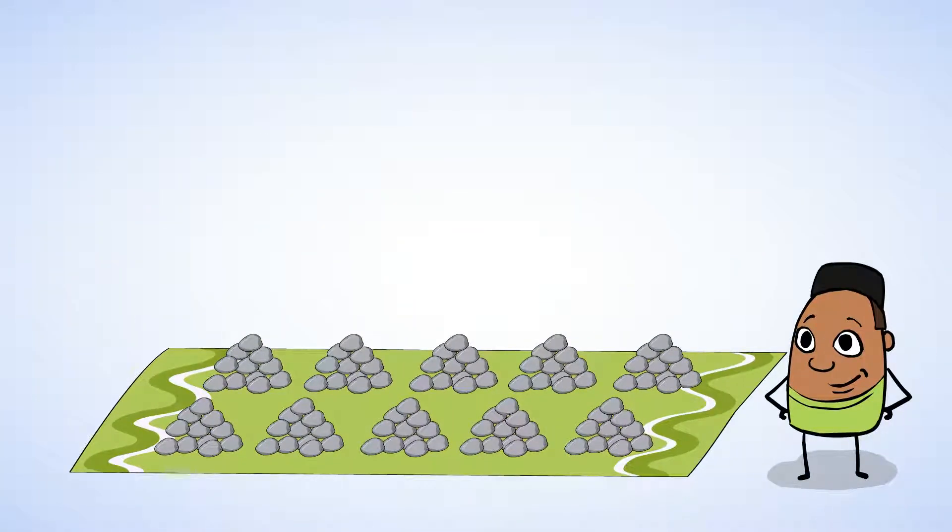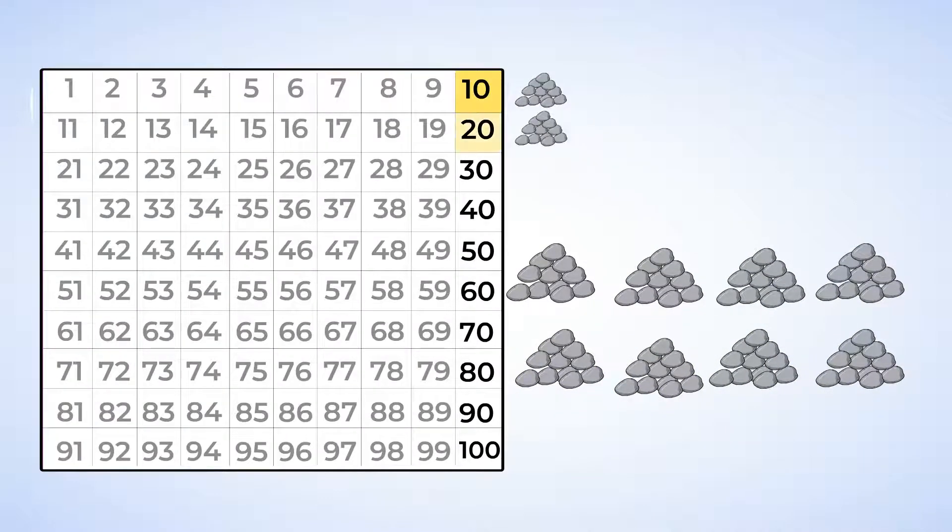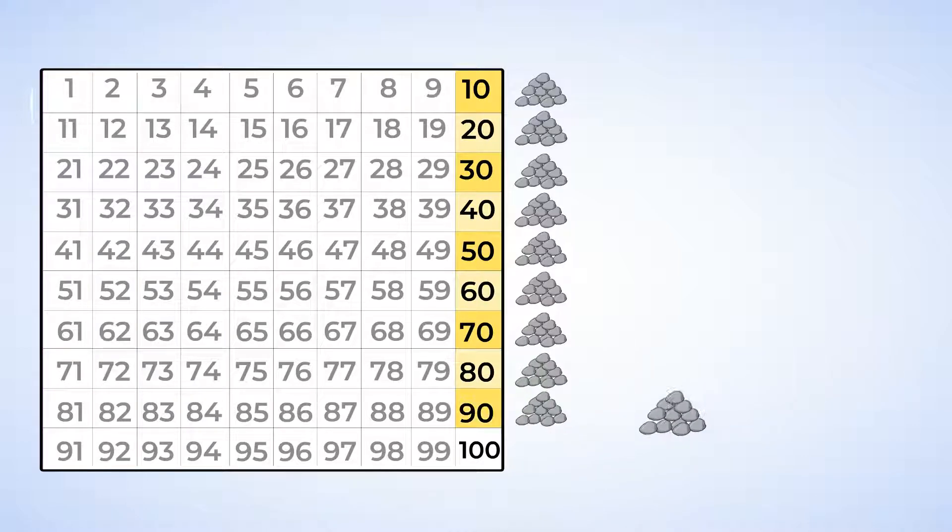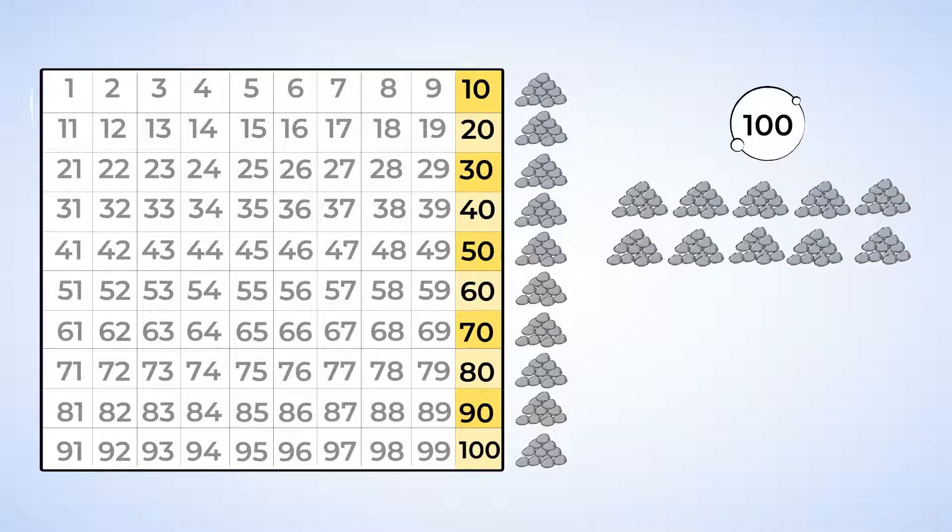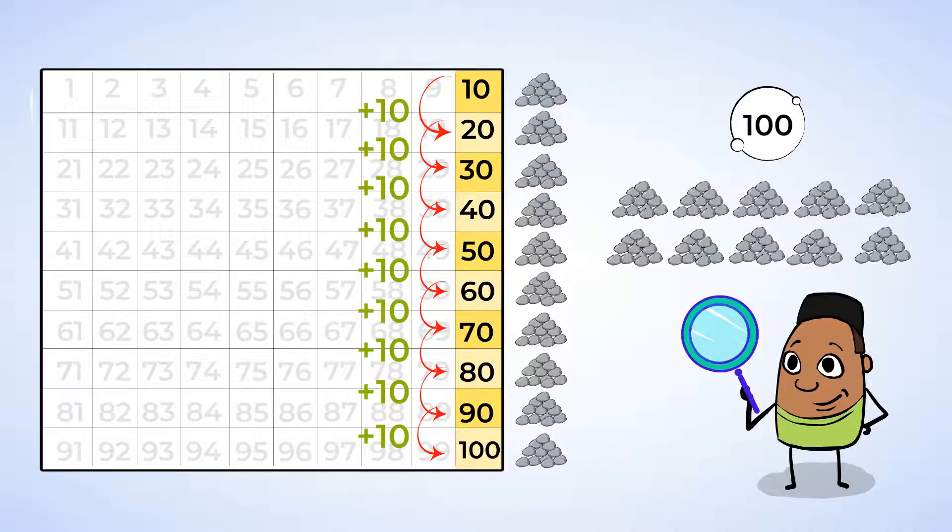And look, while Sue and Eric were collecting shells, Will was collecting pebbles. He's already put all of his pebbles into piles of 10. Now let's line up each pile with our hundreds chart. 10, 20, 30, 40, 50, 60, 70, 80, 90, 100. Wow. There are 100 pebbles. And you counted by 10s all the way up to 100. Great job. You made groups of 10 and counted by 10s.